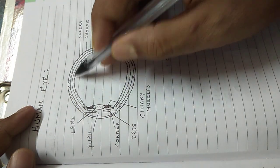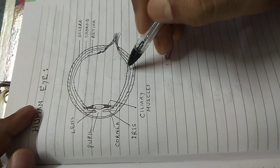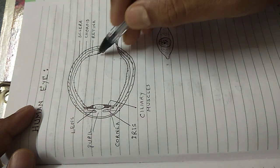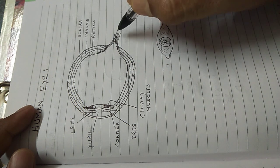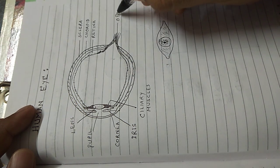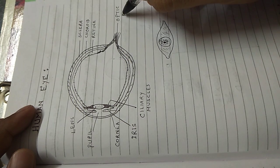These light sensitive neurons will join and will exit the eyeball in the form of the optic nerve. Optic nerve will carry the instruction to the brain for further processing.